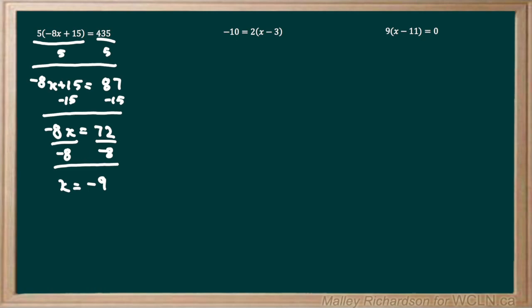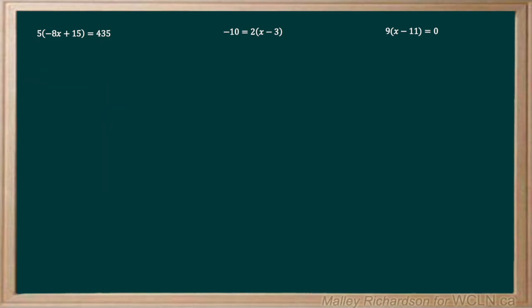Now we're going to move on to the second method. The second method involves our distribution laws, so we're going to distribute this 5 into everything inside the brackets. 5 times negative 8x leaves us with negative 40x, and then 5 times 15 gives us 75, so we're left with all of that equaling 435.